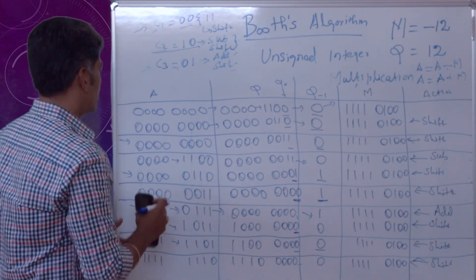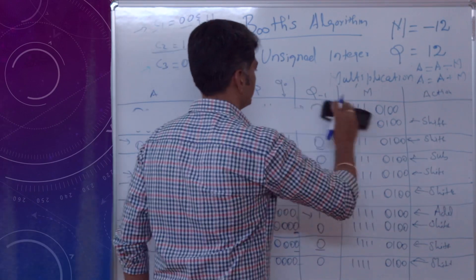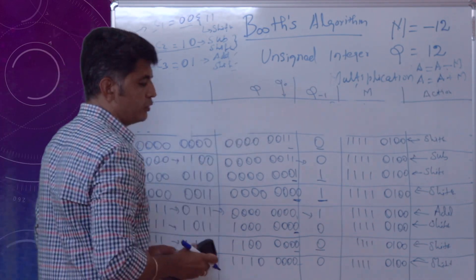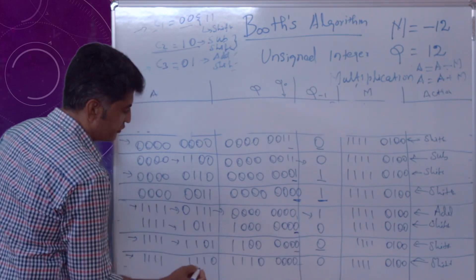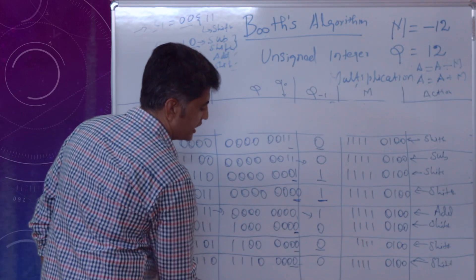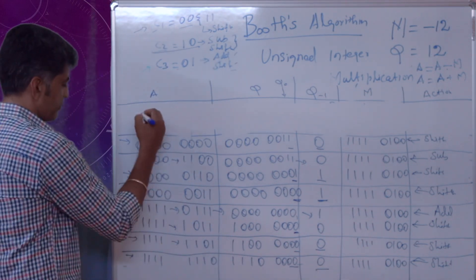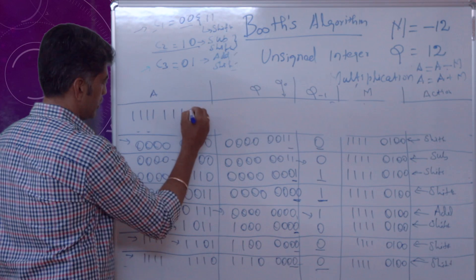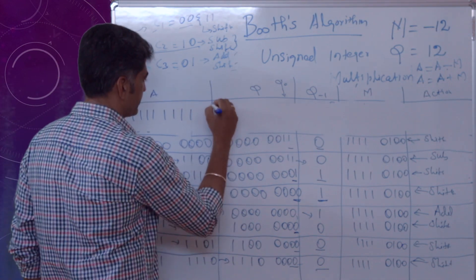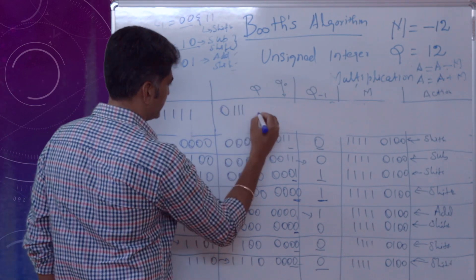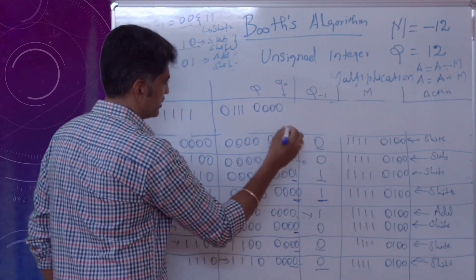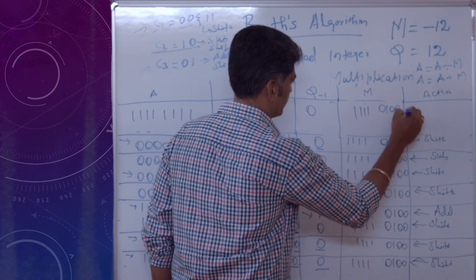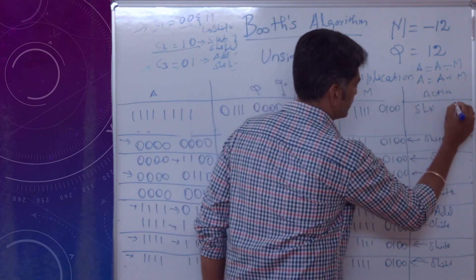Now I perform step 8. Q0 = 0 and Q(-1) = 0, so I perform shift operation again. After arithmetic shift: A = 1 1 1 1 1 1 1 1, Q = 0 1 1 1 0 0 0 0, Q(-1) = 0, M = 1 1 1 1 0 1 0 0. This is step 8 and the shift operation is completed. All 8 steps are now done.